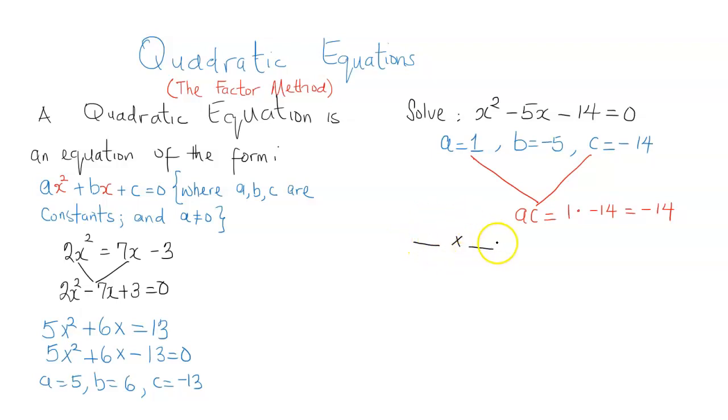The first condition is that the product of the two numbers should give ac, which we found should be negative 14. And the second condition requires the sum of the two numbers to be b, which we found to be negative 5.